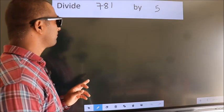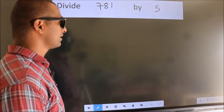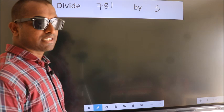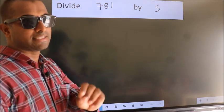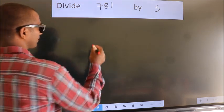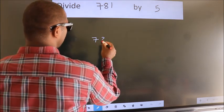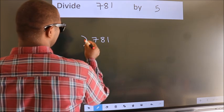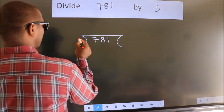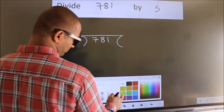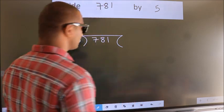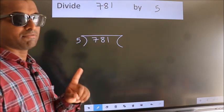Divide 781 by 5. To do this division, we should frame it in this way: 781 here, 5 here. This is your step 1.